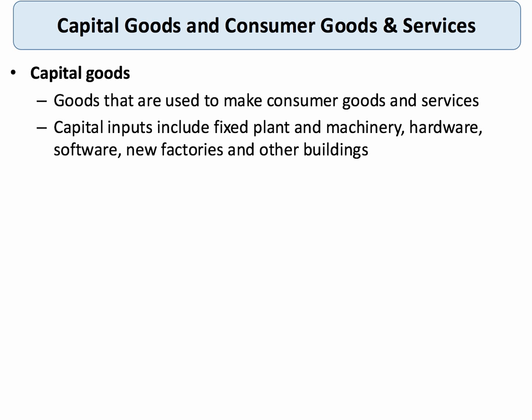We'll start with capital goods. Capital goods are those that are used to make consumer goods and services. Typically we associate capital goods with big bulky fixed plant, machinery and factories, hardware, and we also include software as capital goods now, buildings, and key infrastructure in the economy. Capital goods are used to make the consumer goods and services we enjoy.